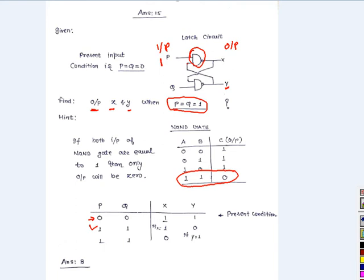If Y equals 1, then the value of X will be 0. Similarly, if X equals 1, then Y will be 0.